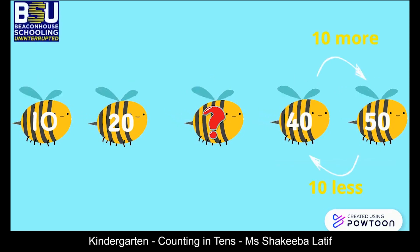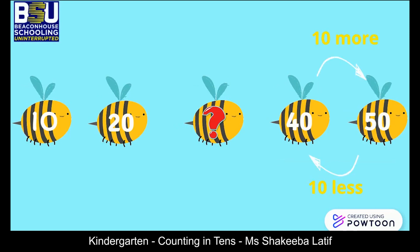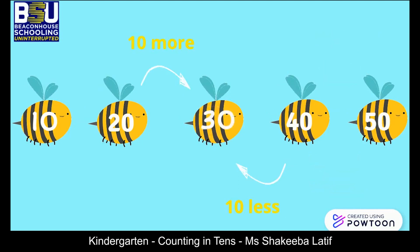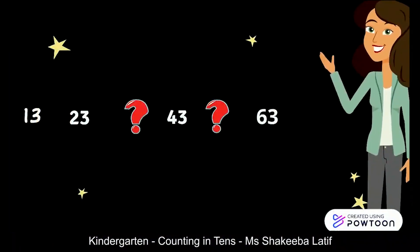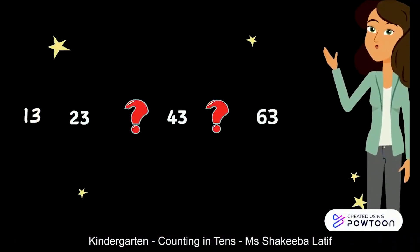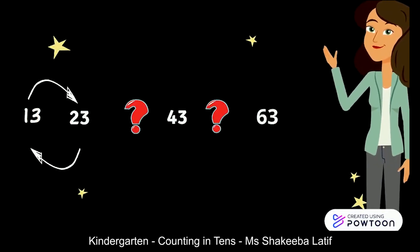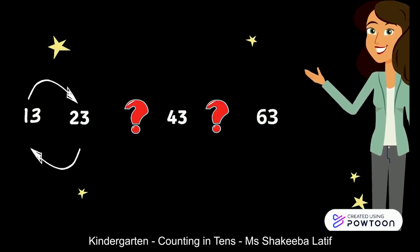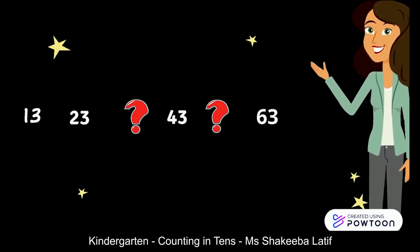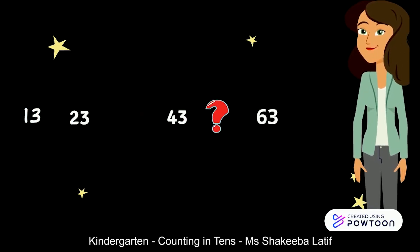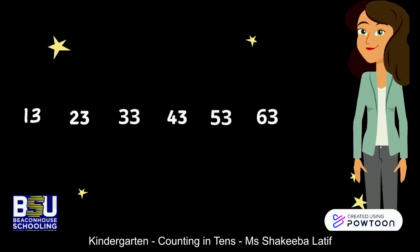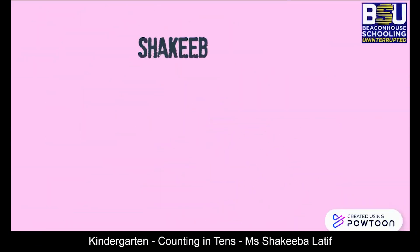With this information we can find the missing number: 10 more than 20 will be 30, and 10 less than 40 will also be 30. Let's see another example — considering the difference between 13 and 23, which is 10, we can see the tens pattern here as well: 13, 23, 33, 43, 53, 63. This concludes the lesson — see you next time, bye bye!